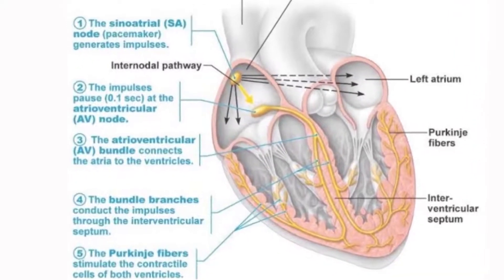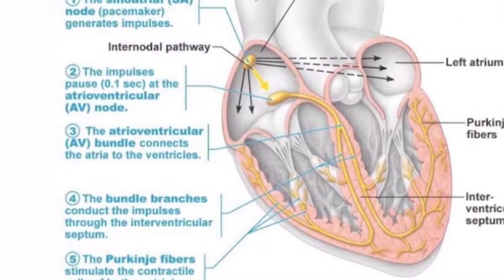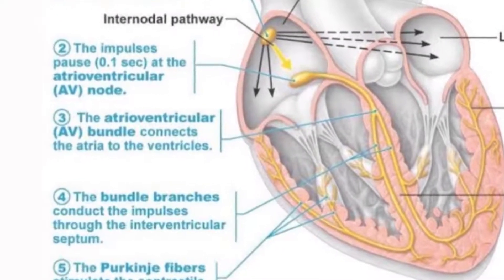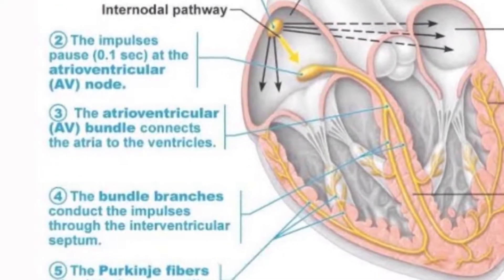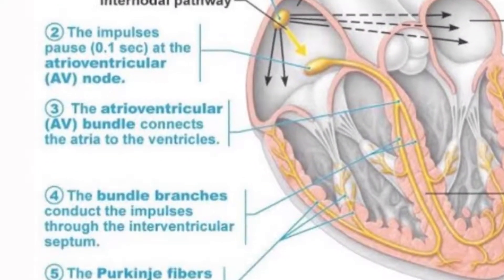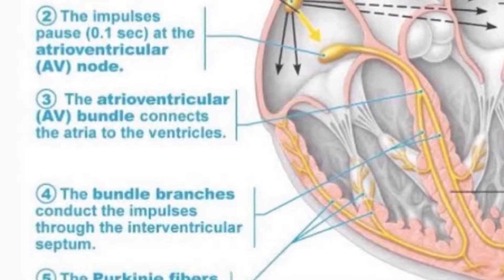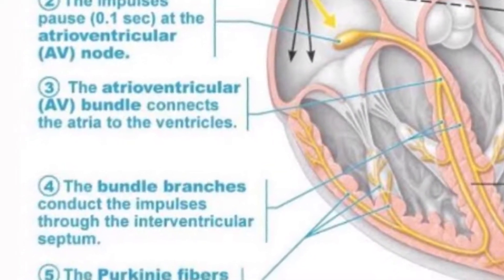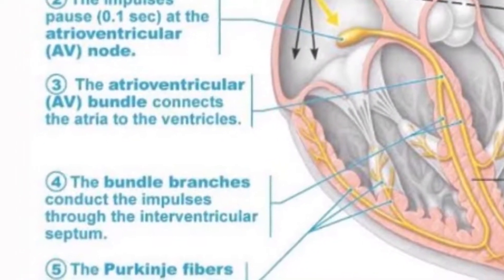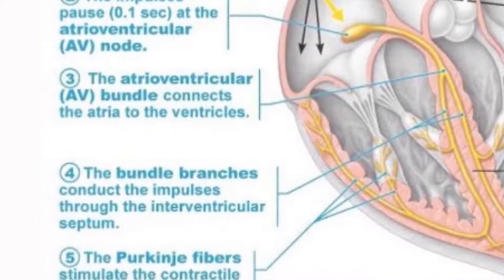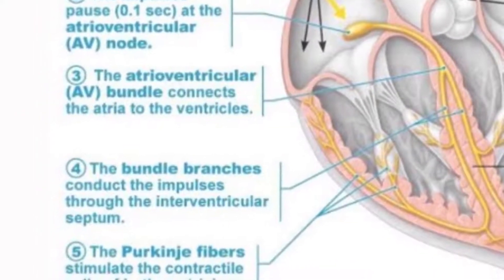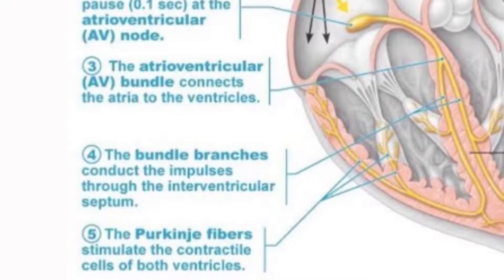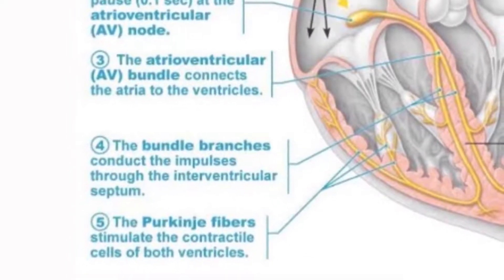The atrioventricular bundle, or bundle of His, is also called the bundle of His because it was first discovered by a German cardiologist, Wilhelm His. It is a specialized bundle of nerve tissue located in the septum which passes electrical impulses through the septum.